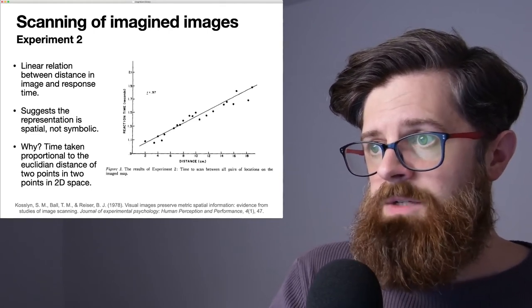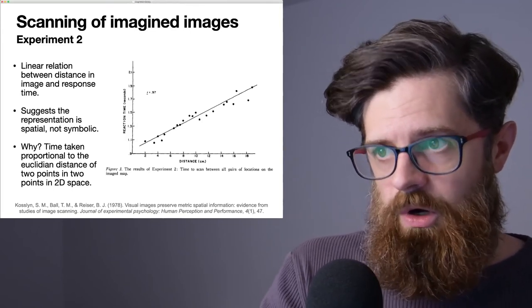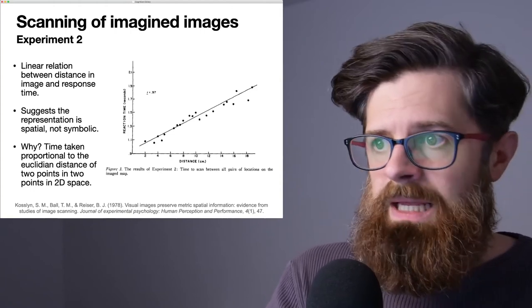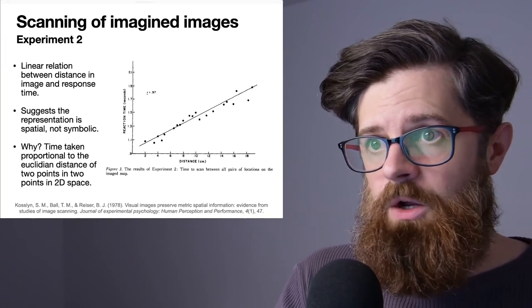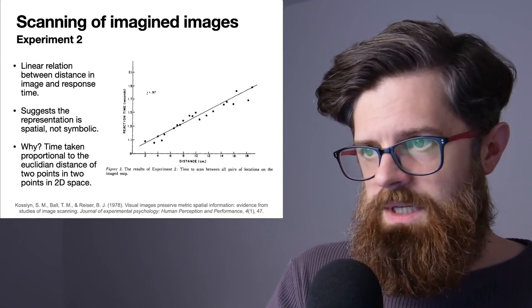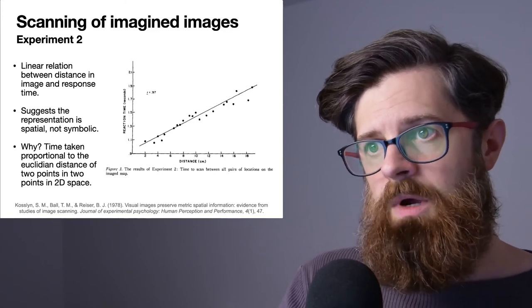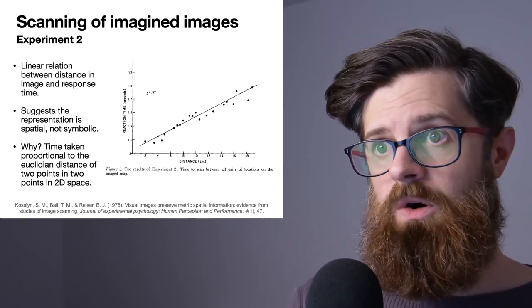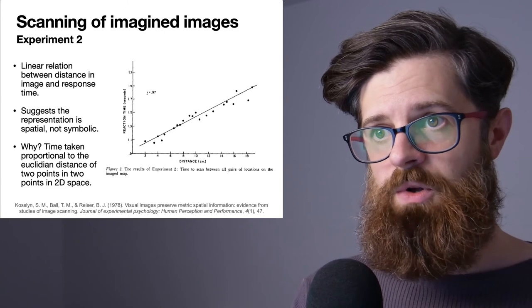For each of those pairs we have a reaction time and what we can also see is that they have put a line of best fit through these dots and we can see pretty convincingly that this is a straight line. They report the r value being 0.97. In psychology this is pretty good evidence that there is this linear relationship between the distance of the points that the imaginary black dot had to travel and how long it took the participants to respond.